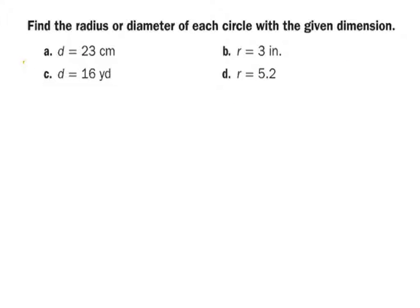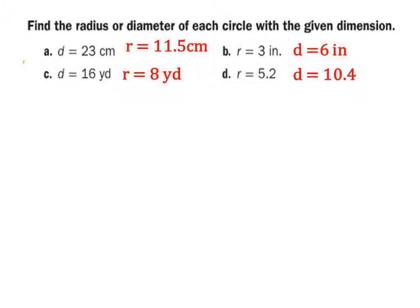Go ahead and take a minute to do these examples. You can find the answers by figuring out if it gives you the diameter and asks for radius, or asks for diameter and gives you the radius. For A: just take 23, divide by two, you get 11 and a half centimeters. B: we need diameter, so take three inches times two — six inches. C: 16 yards is the diameter, divide by two, radius is eight yards. D: the radius is 5.2 — the decimal is okay, and since it doesn't give units, there's no reason to label D.